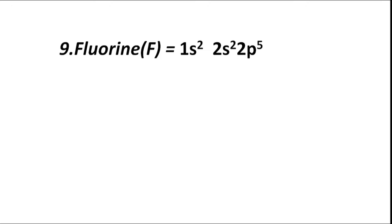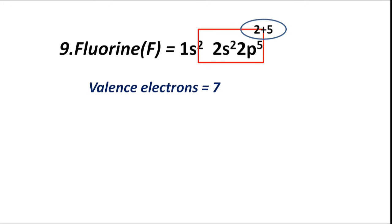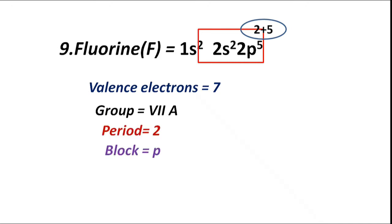Atomic number 9, fluorine (F), has electronic configuration 1s2 2s2 2p5. The valence shell is L. Total valence electrons are 2 from 2s2 and 5 from 2p5, equal to 7. Therefore group VIIA, period 2. Block P — valence electrons fill the p sub-shell, hence block is P. Valency is 1.